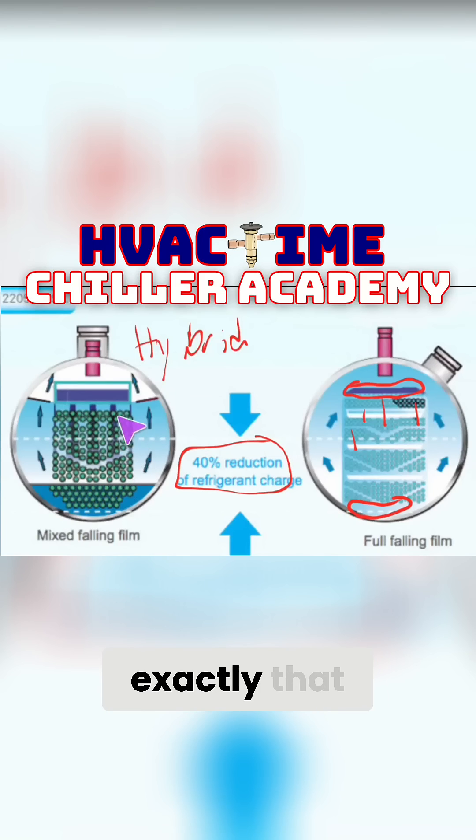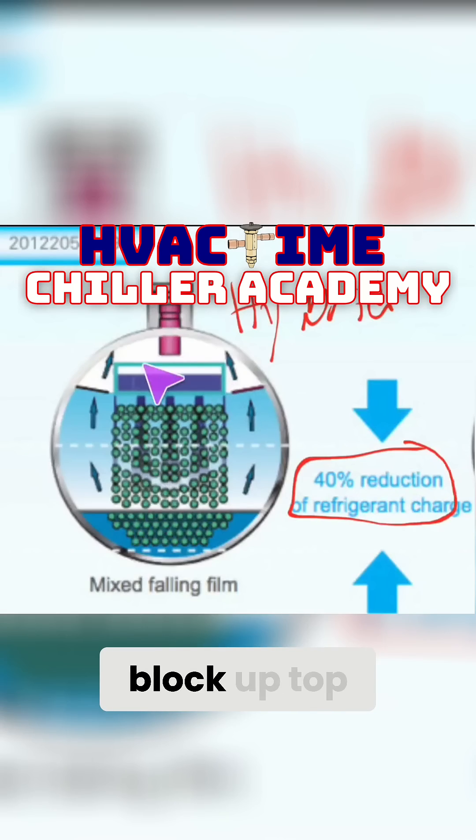The hybrid evaporator is exactly that. The goal is we're still using the concept of the falling film, having refrigerant rain down and just boil off as it goes and gets collected back into the suction. It has a distribution block up top. Liquid refrigerant is injected into the top of it and goes through a metering device.